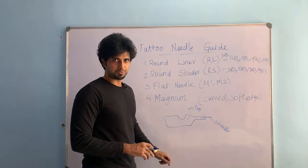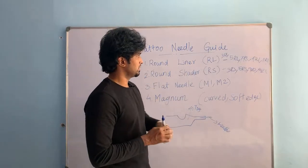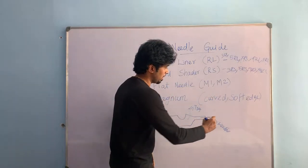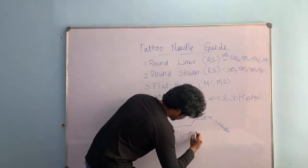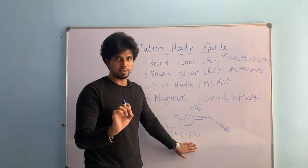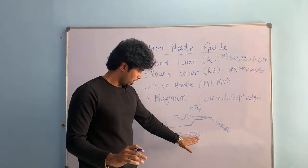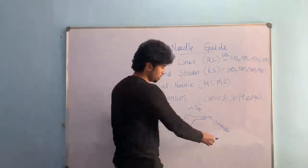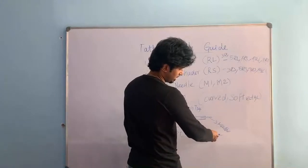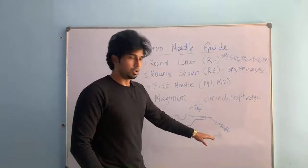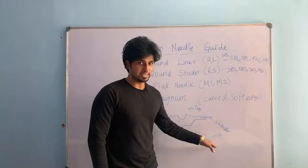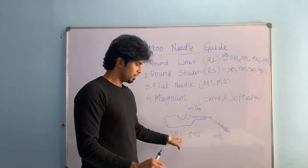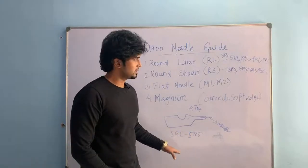For traditional coil machine users, here is an important point. For a 5RL needle, most artists mistakenly take 5RT tips — but that is wrong. 5RT is meant and created for 5RS, not for 5RL. Using the wrong tip causes the needle to go in a circular motion instead of a vertical punch, doing different punches. Because of these different punches, the skin may get damaged very easily.